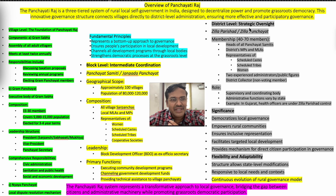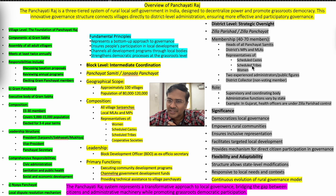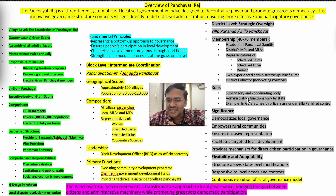The district level provides strategic oversight and is called Jilla Parisad or Jilla Panchayat. Membership consists of 40 to 70 members, including heads of all Panchayat Samitis, district MPs and MLAs, representatives of Scheduled Castes, Scheduled Tribes, and women, two experienced administrators, public figures, and the District Collector as a non-voting member.